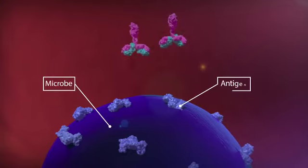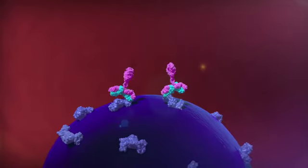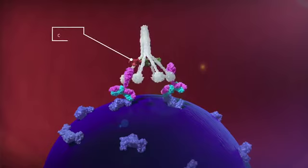The classical complement pathway plays an important role in the immune system of a healthy person, helping to avoid illness. Its key function is to trigger an immune response after antibodies detect microbes and damaged cells as pictured here.